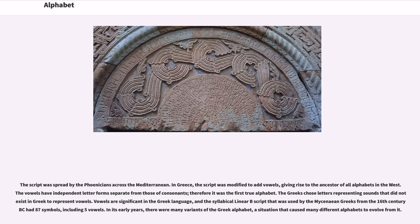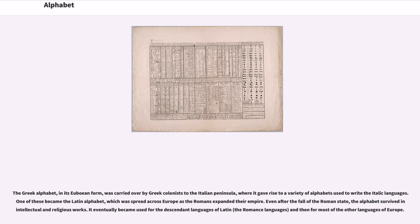In its early years, there were many variants of the Greek alphabet, a situation that caused many different alphabets to evolve from it. The Greek alphabet, in its Euboean form, was carried over by Greek colonists to the Italian peninsula, where it gave rise to a variety of alphabets used to write the Italic languages. One of these became the Latin alphabet, which was spread across Europe as the Romans expanded their empire. Even after the fall of the Roman state, the alphabet survived in intellectual and religious works, and eventually became used for the descendant languages of Latin, the Romance languages, and then for most of the other languages of Europe.